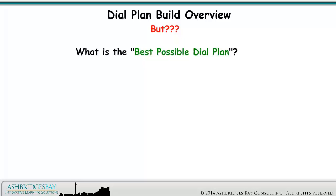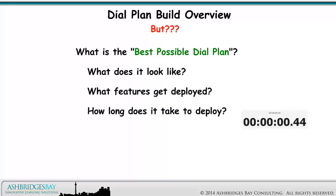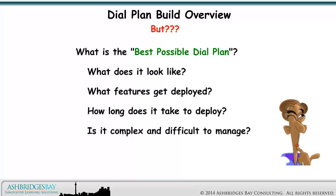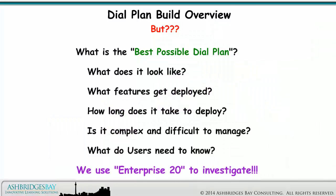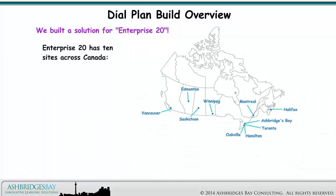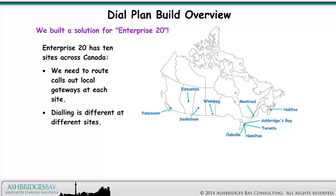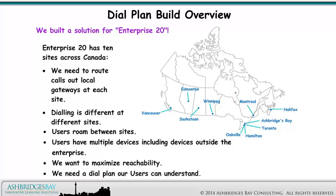What is the best possible dial plan? What does it look like? What features get deployed? How long does it take to deploy? Is it complex and difficult to manage? What do users need to know? We use Enterprise 20 to investigate. Enterprise 20 has 10 sites across Canada. We need to route calls out local gateways at each site. Dialing is different at different sites, users roam between sites, users have multiple devices including devices outside the enterprise. We want to maximize reachability, and we need a dial plan our users can understand.